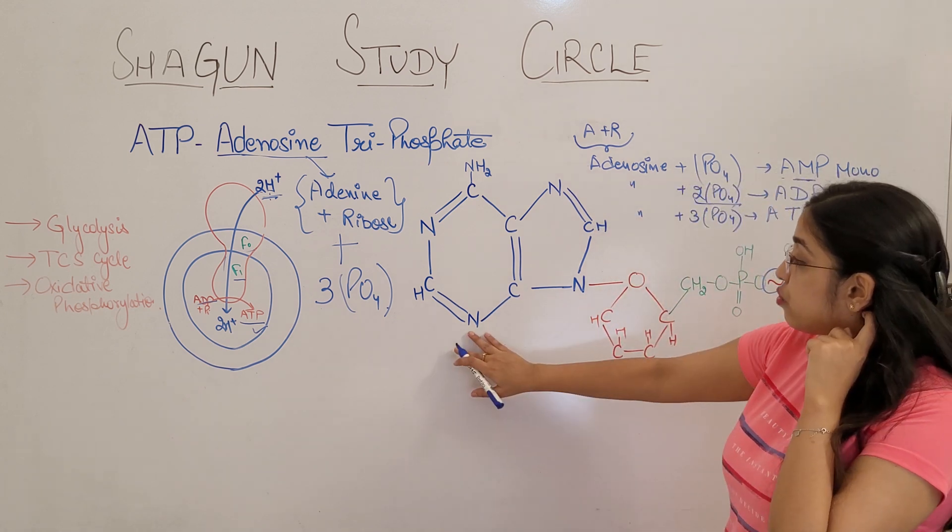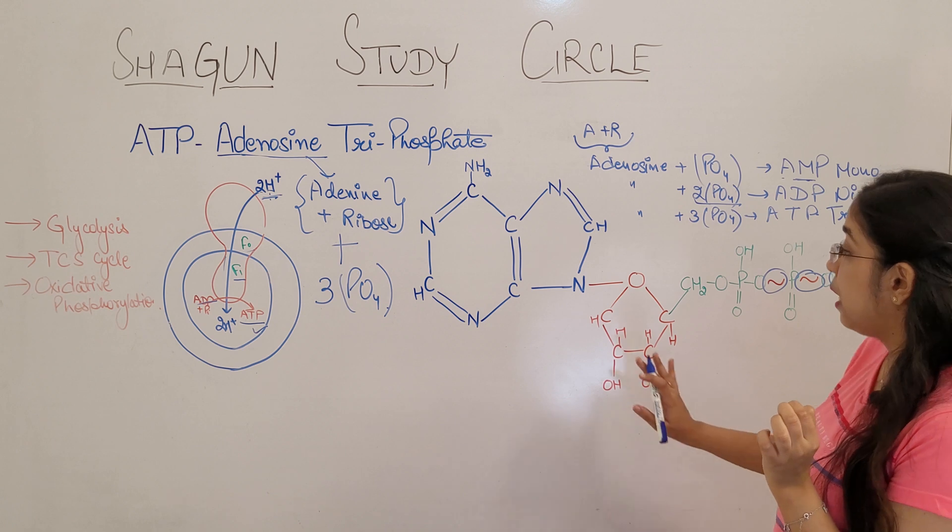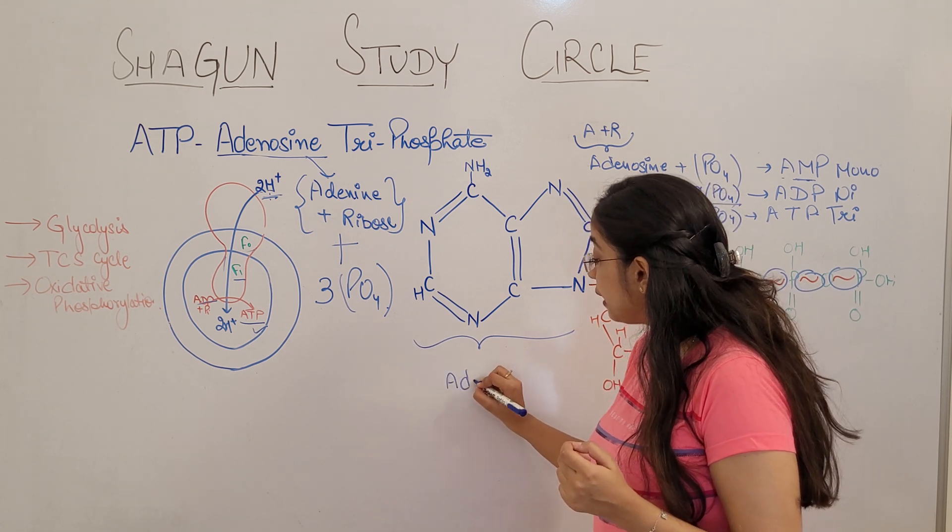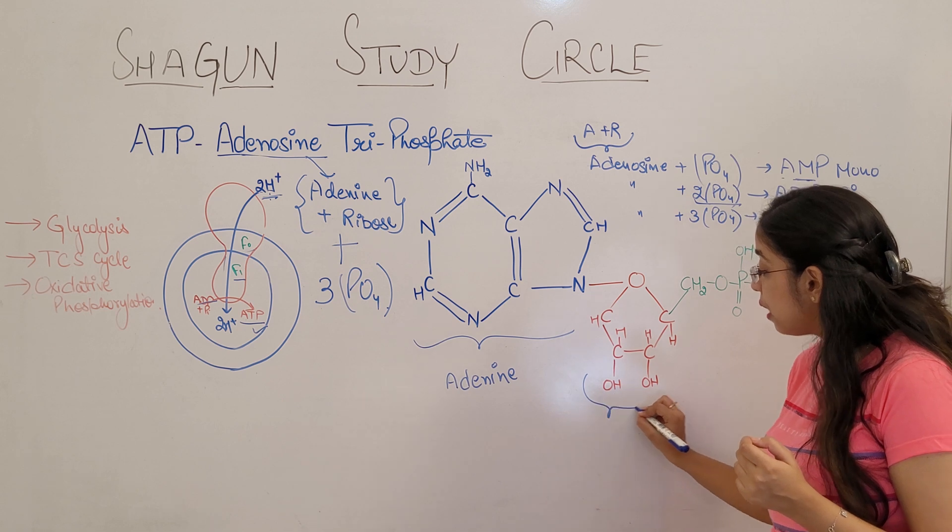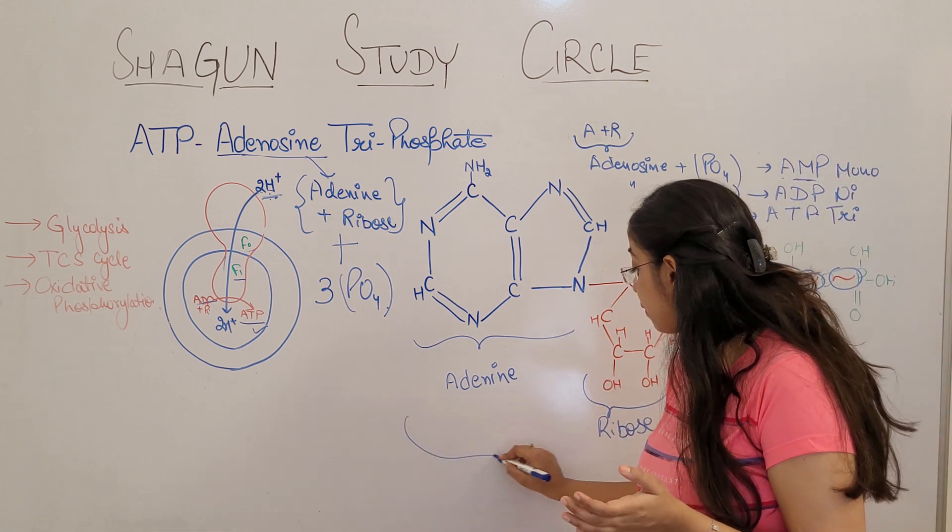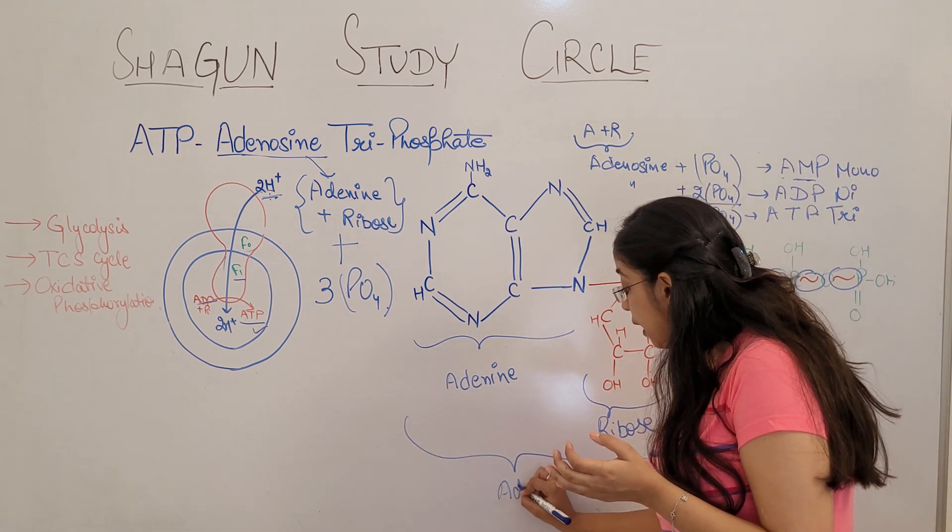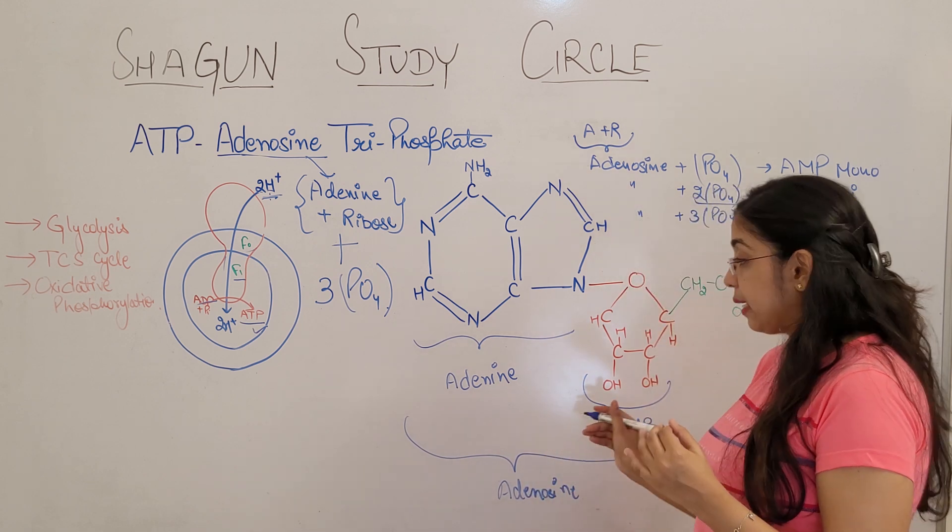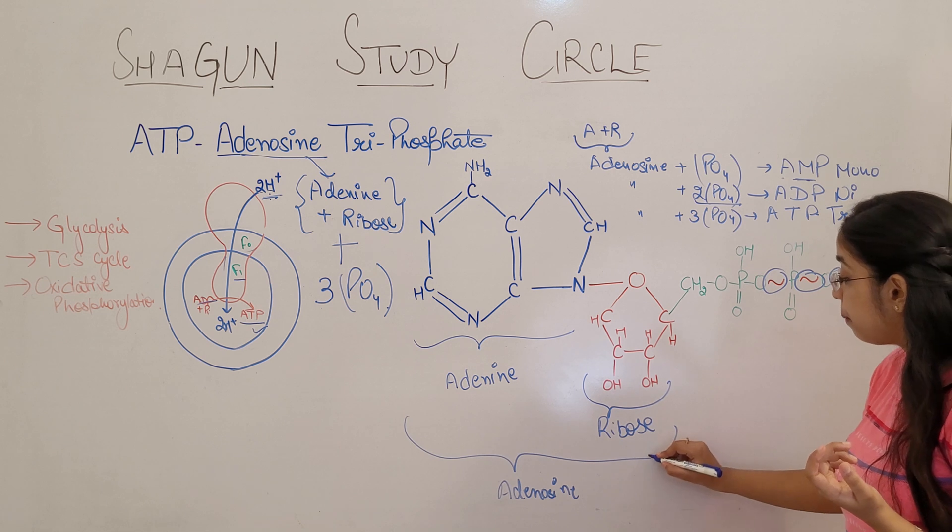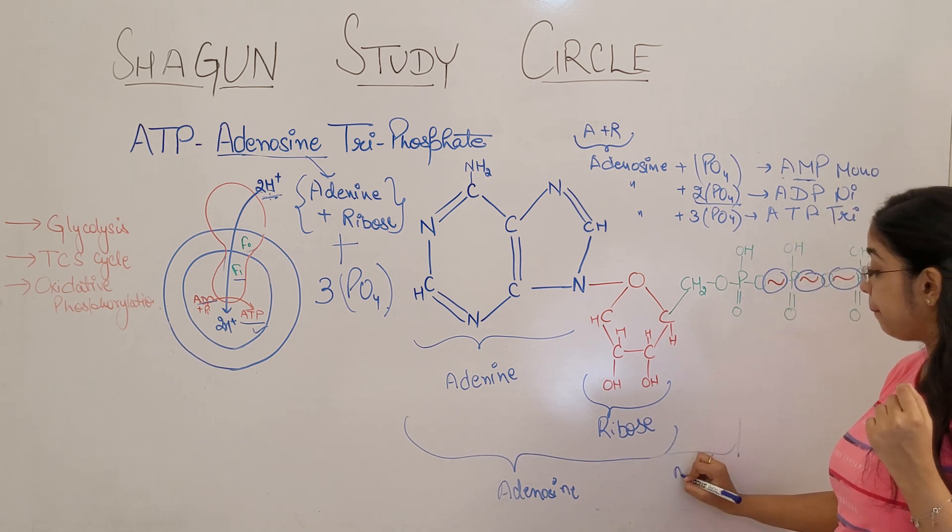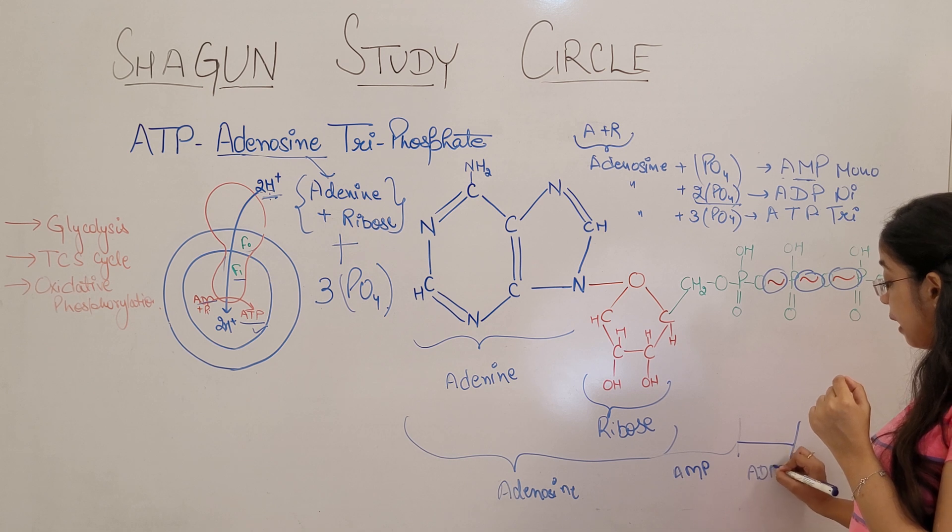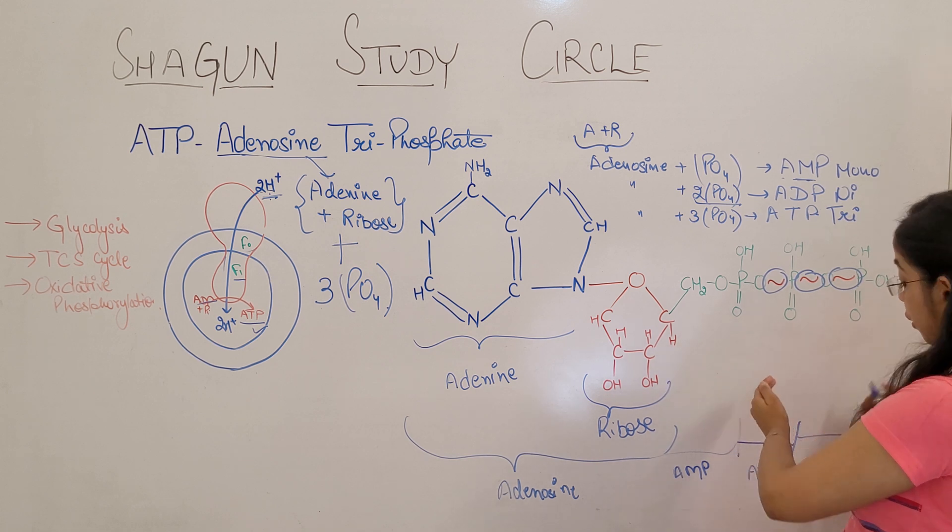Now here I have drawn the structure, the chemical structure of ATP. Here we can see what is this? This part which is drawn blue in color, it is the adenine. This one is ribose, ribose sugar. Adenine and ribose together form the adenosine. And these are three phosphate molecules. Adenosine plus if it combines with single phosphate molecule it forms AMP. If it joins with two phosphate molecules it forms ADP. And if it joins with three phosphate molecules it forms ATP.